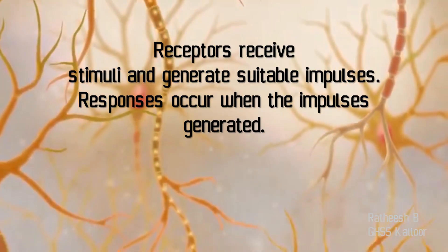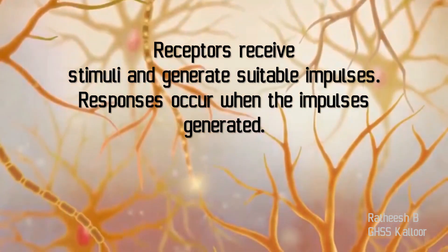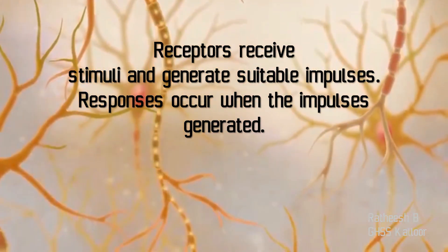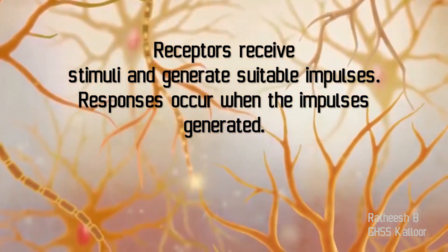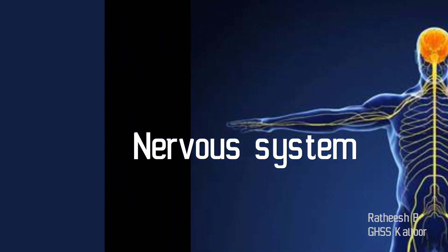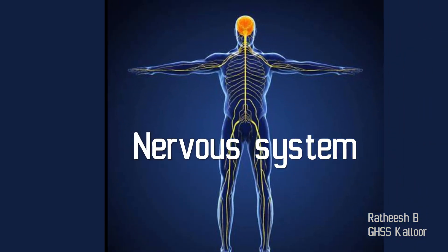Receptors receive stimuli and generate suitable impulses in the body. When the receptors receive stimuli, they generate suitable impulses, and responses occur as a result. There is a special organ system in our body to respond to stimuli and control and coordinate various physiological activities. What is the name of the organ system which is responsible to receive stimuli and control and coordinate various body activities? The name of that organ system is the nervous system.